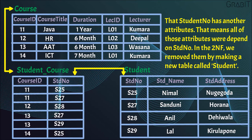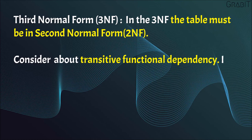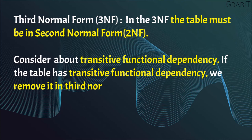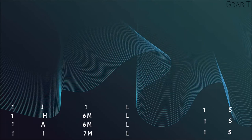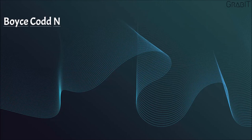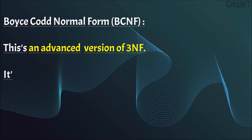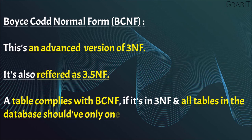Third Normal Form (3NF): In the Third Normal Form, the table must be in Second Normal Form. We consider Transitive Functional Dependency. If the table has Transitive Functional Dependency, we remove it in Third Normal Form. A field or attribute which depends on a non-key attribute is called Transitive Functional Dependency. Boyce-Codd Normal Form (BCNF) is an advanced version of Third Normal Form, also referred to as 3.5NF. A table is in BCNF if it is in Third Normal Form and all tables in the database should have only one primary key.